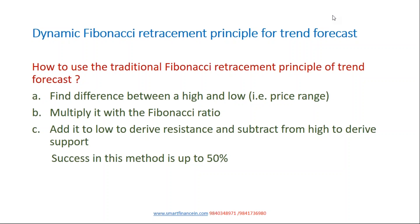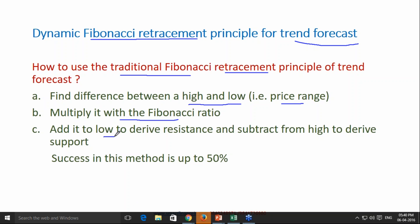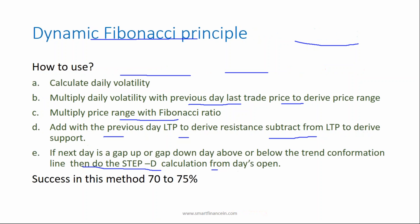In this presentation I am going to describe the dynamic Fibonacci retracement principle for trend forecast. This is one of our best innovations, and using this principle many different concepts we have developed for trading. I am going to describe this particular method, what is this innovation and how far it has succeeded. The success rate of the traditional Fibonacci retracement method is up to 50%.